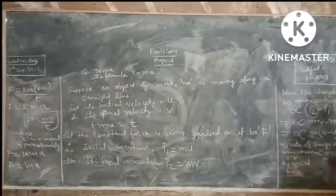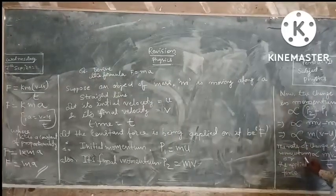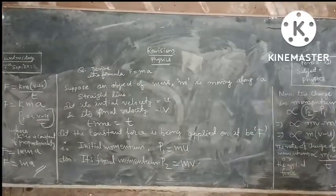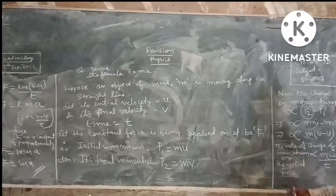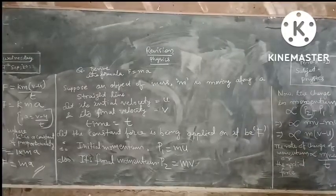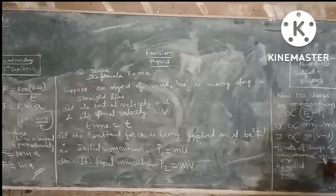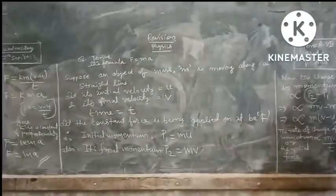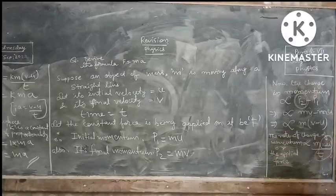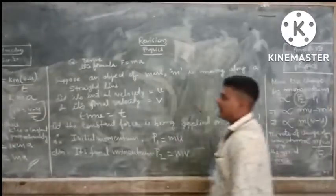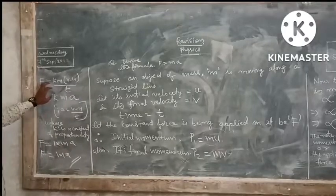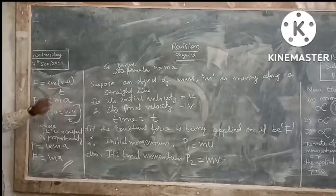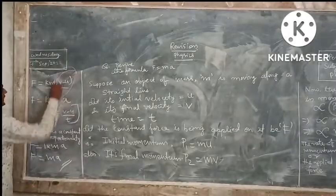Now, the rate of change of momentum, or the applied force — the rate at which momentum is changing means some force is acting on the object. Therefore, force is directly proportional to m(v minus u) divided by t. Now, as we know that v minus u by t equals acceleration, that's why we have put here: F equals k times m times (v minus u) by t, substituting v minus u by t equals a.